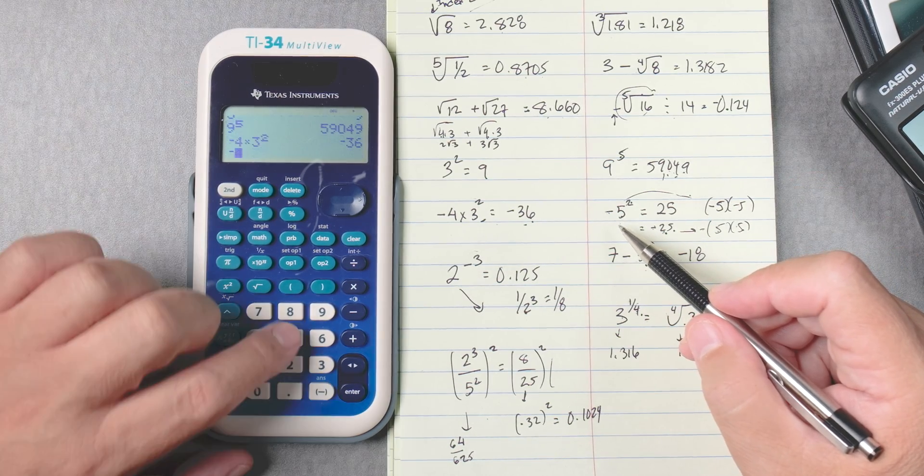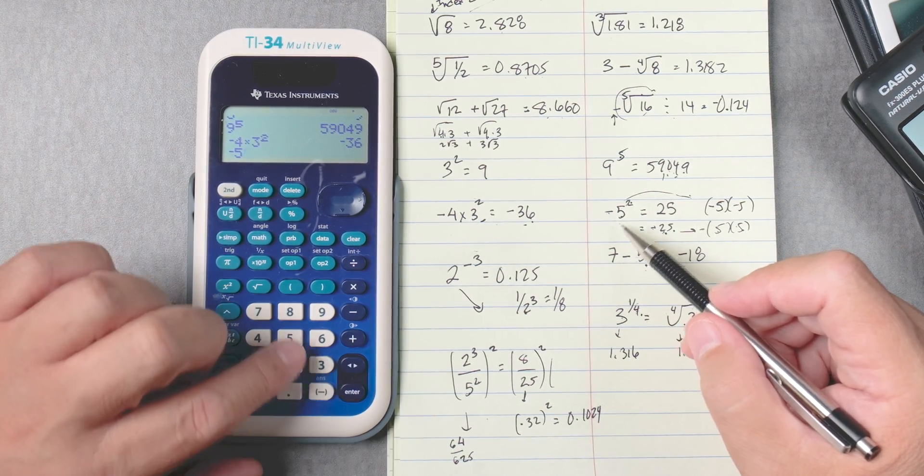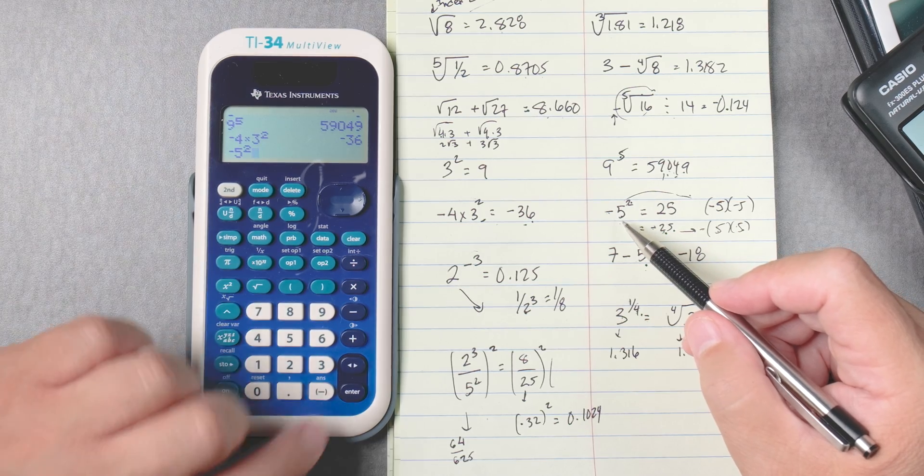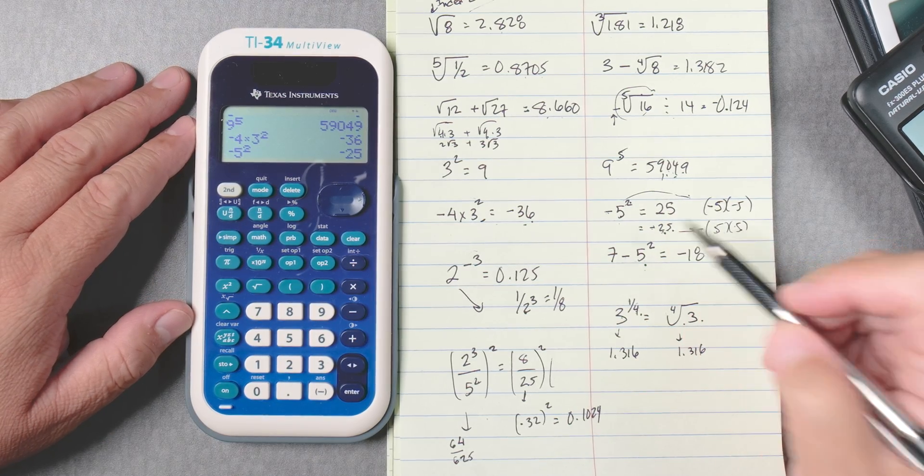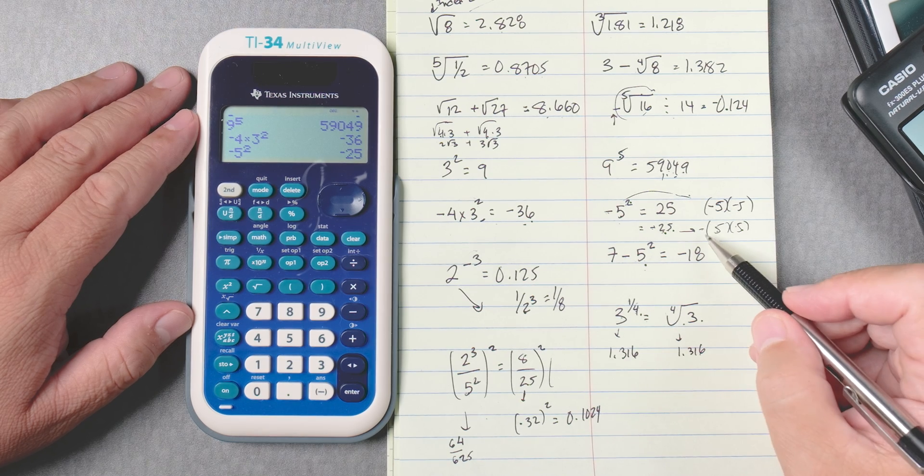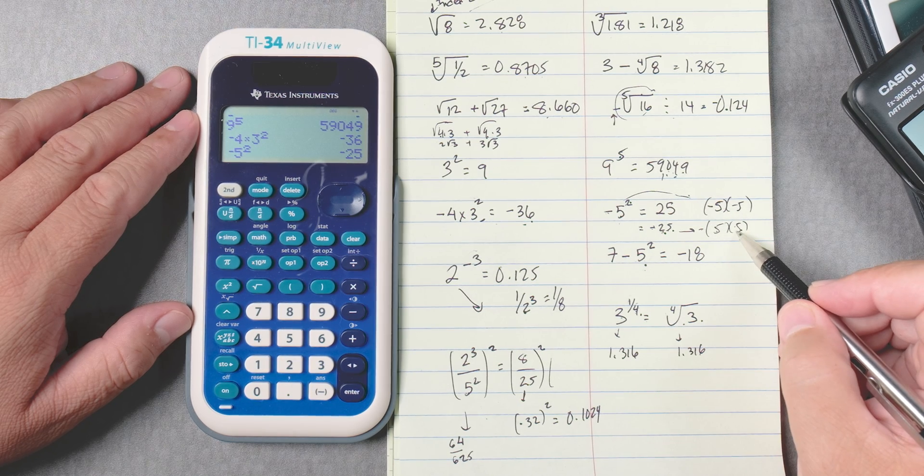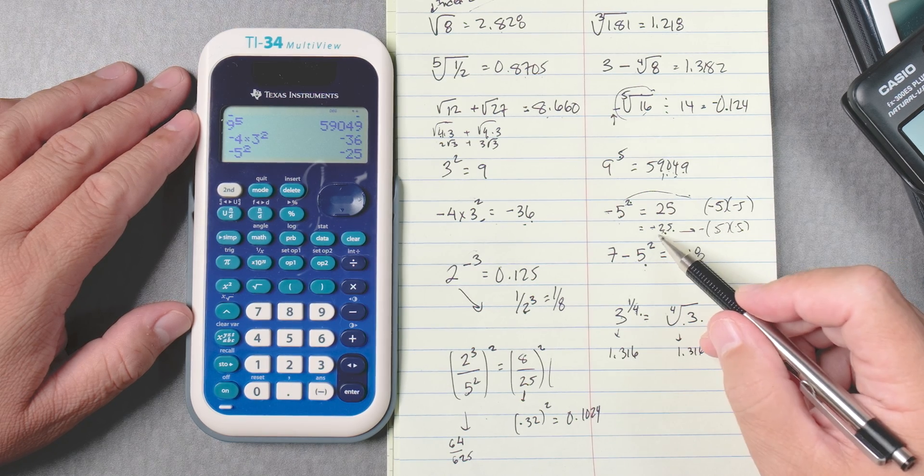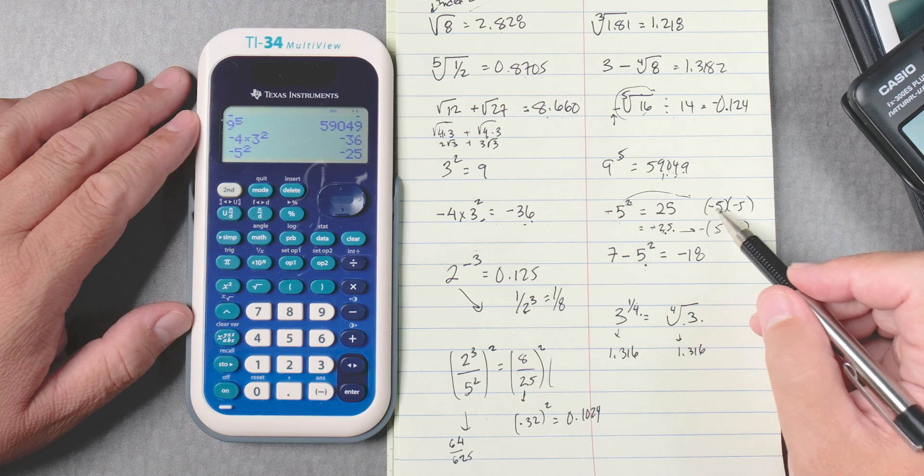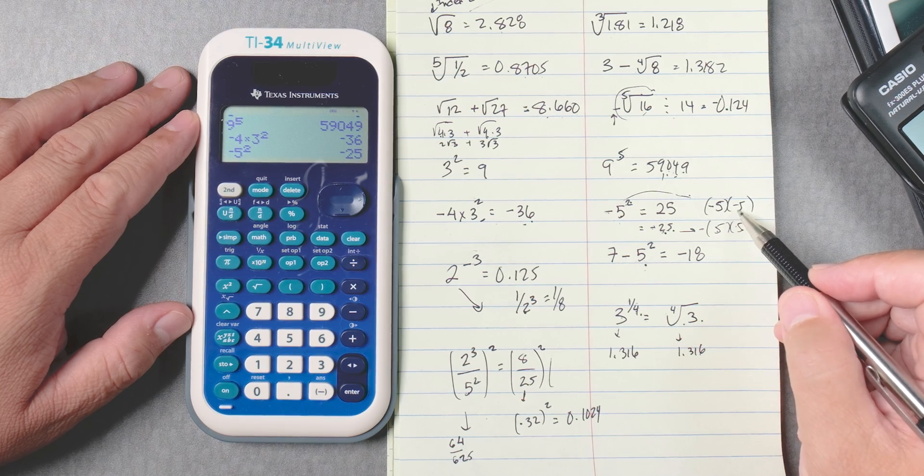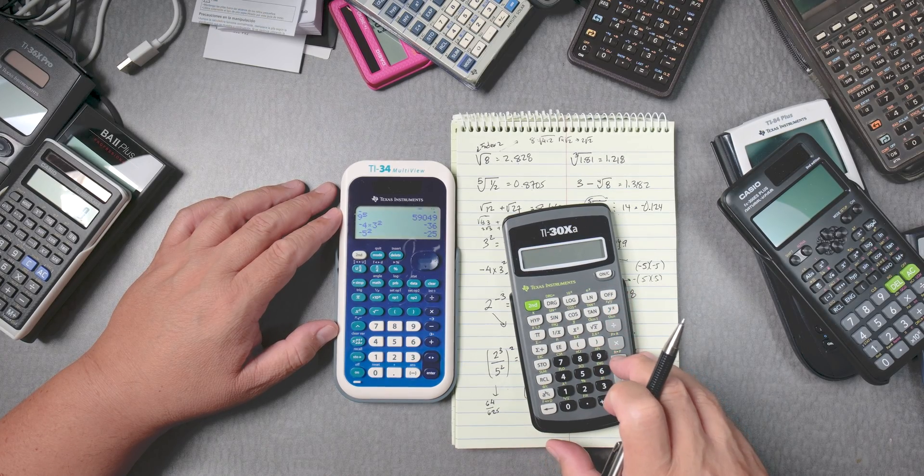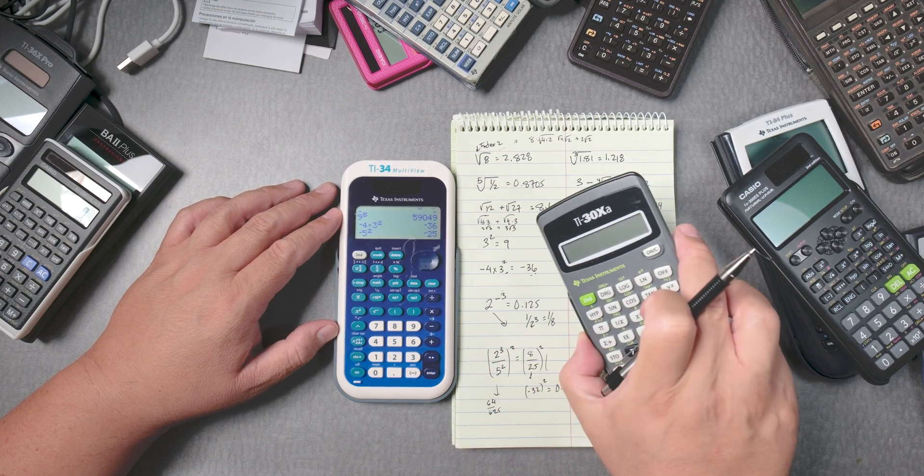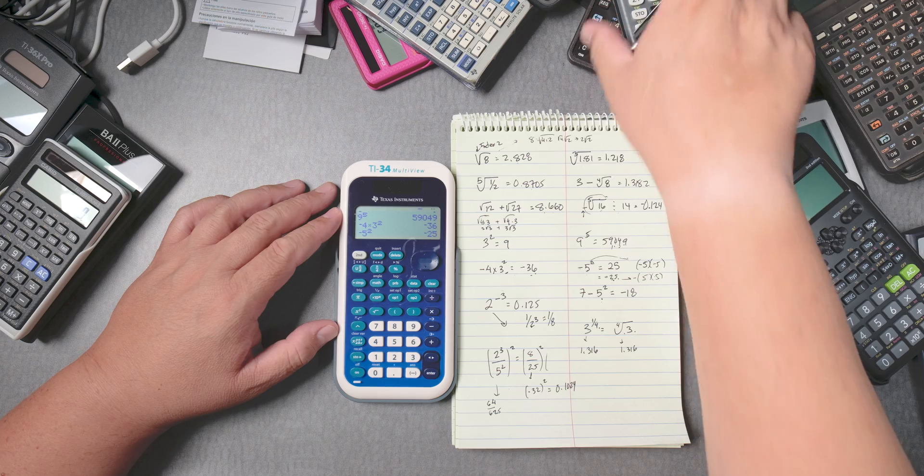Let's look at this one. Negative 5, not subtract 5, negative 5 squared, enter. It gives you negative 25. Why? Well, it's doing 5 times 5, which gives you 25, and then the negative. It's not doing negative 5 times negative 5, okay? This calculator, I believe, does that. This one's not an algebraic calculator, by the way. This one is.